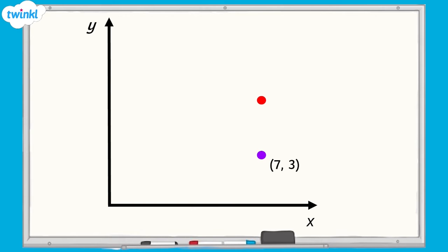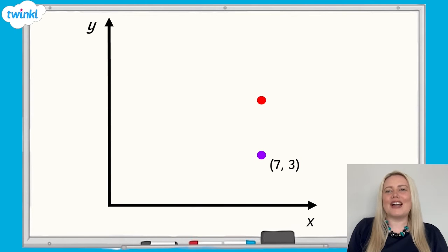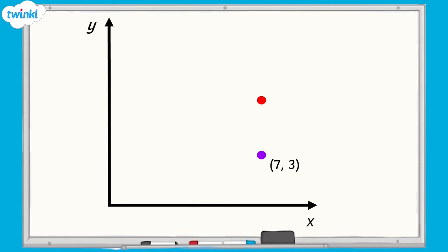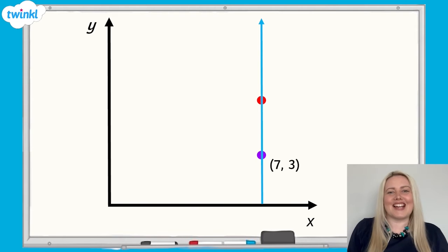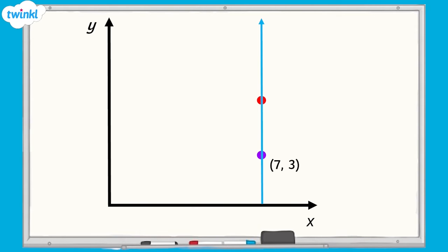In this example, we can see that there are two points shown on the grid: a red point and a purple point. The purple point has coordinates of 7, 3. How could we find the coordinates of the red point? If we look along the x-axis, we can see that the points are in line with each other. This means that both points share the same coordinate on the x-axis, as they are the same distance along the x-axis. The x-axis coordinate of the purple point is 7, which means our red point will also have an x-axis coordinate of 7.